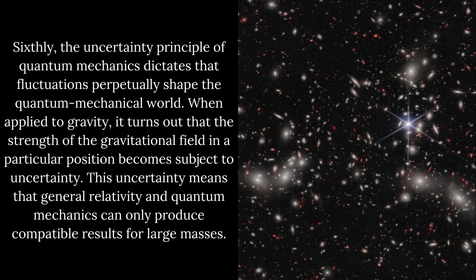Sixthly, the uncertainty principle of quantum mechanics dictates that fluctuations perpetually shape the quantum mechanical world. When applied to gravity, it turns out that the strength of the gravitational field in a particular position becomes subject to uncertainty. This uncertainty means that general relativity and quantum mechanics can only produce compatible results for large masses.